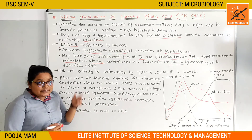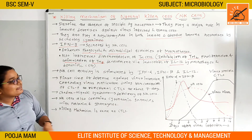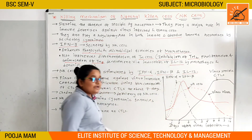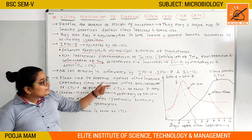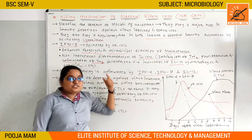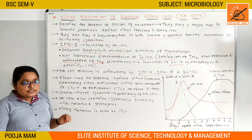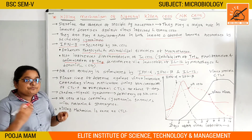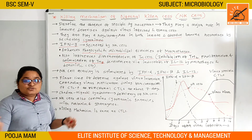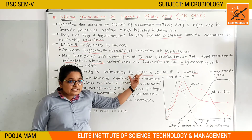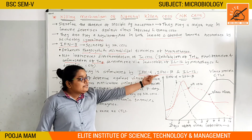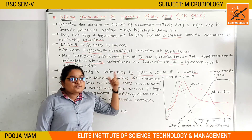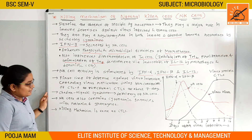The NK cell activity is stimulated by interferon gamma, interferon alpha, interferon beta, and interleukin-12. These are the cytokines which regulate the activity of natural killer cells. Interferon gamma is secreted by NK cells, and the other cytokines — interferon alpha, interferon beta, and interleukin-12 — affect NK cell activity.